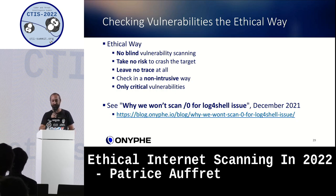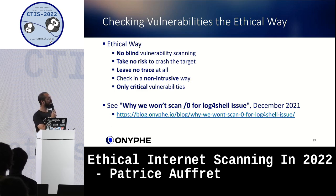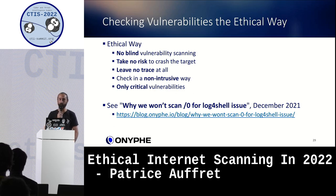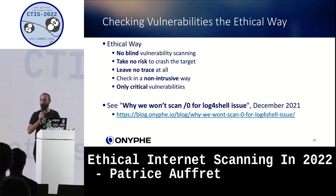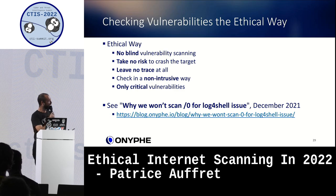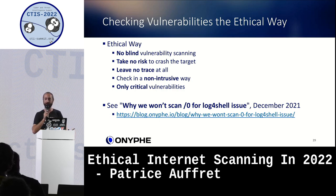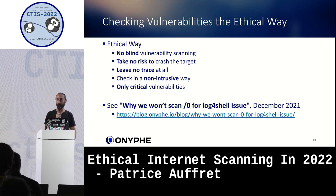Rule one: no blind vulnerability scanning. Don't scan 3.8 billion IP addresses to find 15,000 vulnerable devices. At Onif, we can do targeted scanning because we identify devices first — we can say there are 1,048,000 devices of a specific type exposed on the internet and check only those. No blind scanning means a much better signal-to-noise ratio.